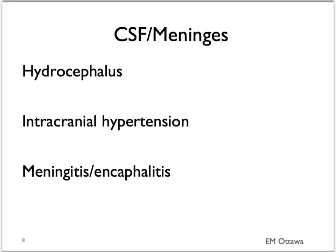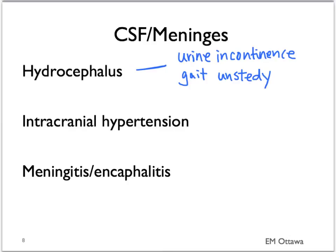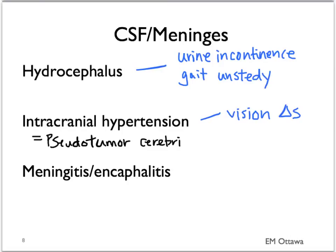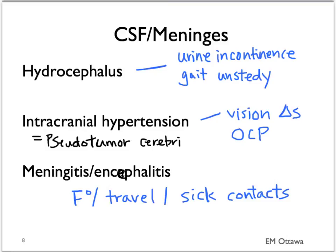For CSF and meningitis diagnoses: for hydrocephalus, we need to ask about gait disturbance and urinary incontinence. For intracranial hypertension or pseudotumor cerebri, we will ask about vision changes and the use of oral contraceptive pills. For meningitis and encephalitis, we need to ask about history of fever, travel, sick contacts, and vaccination history.